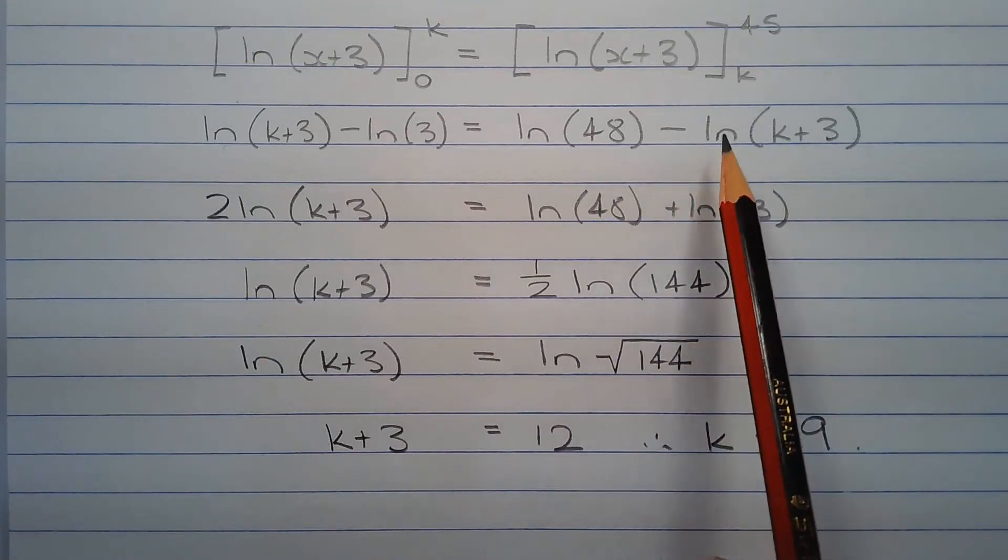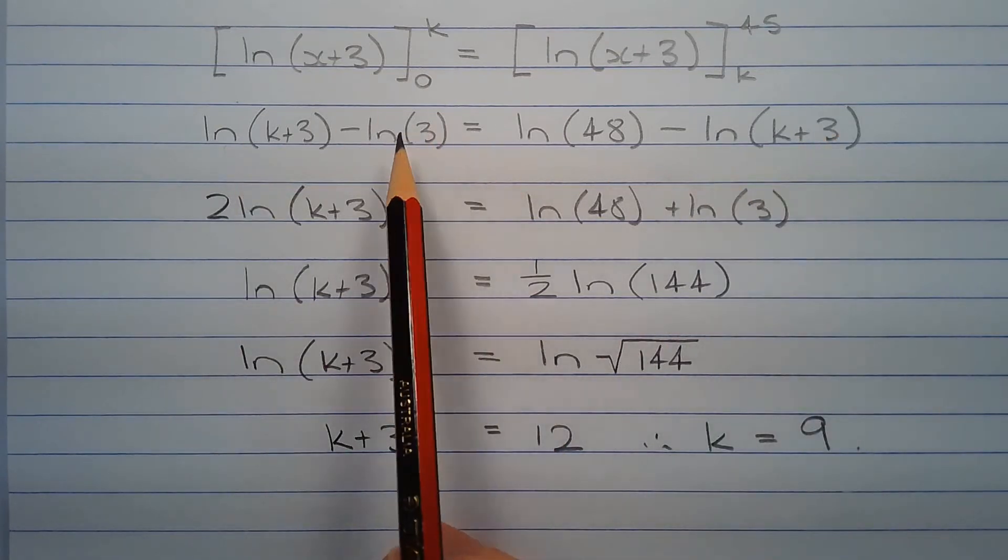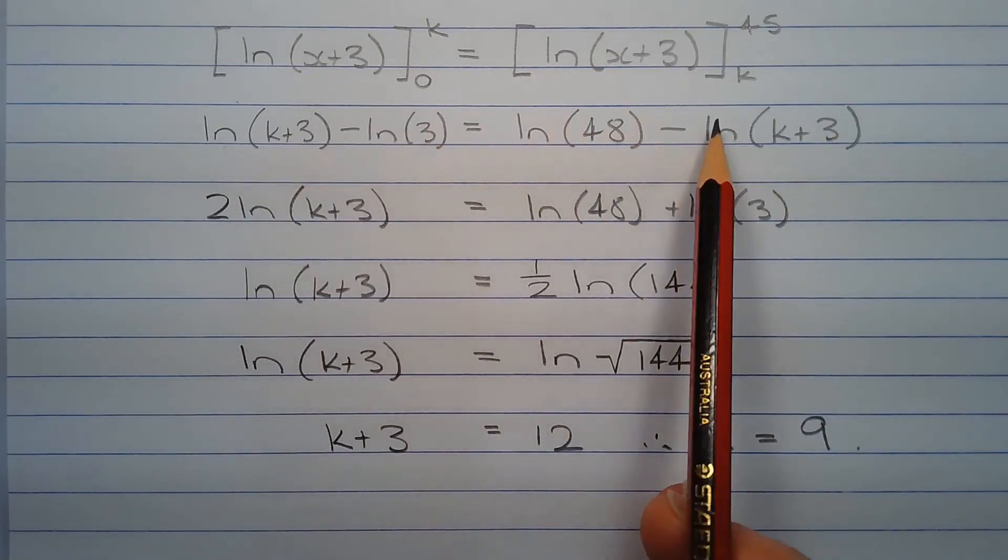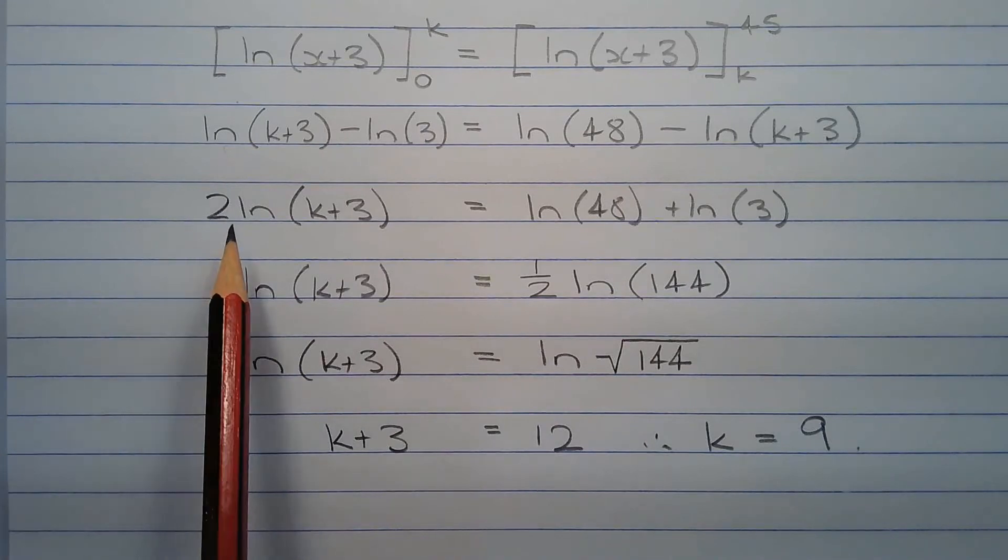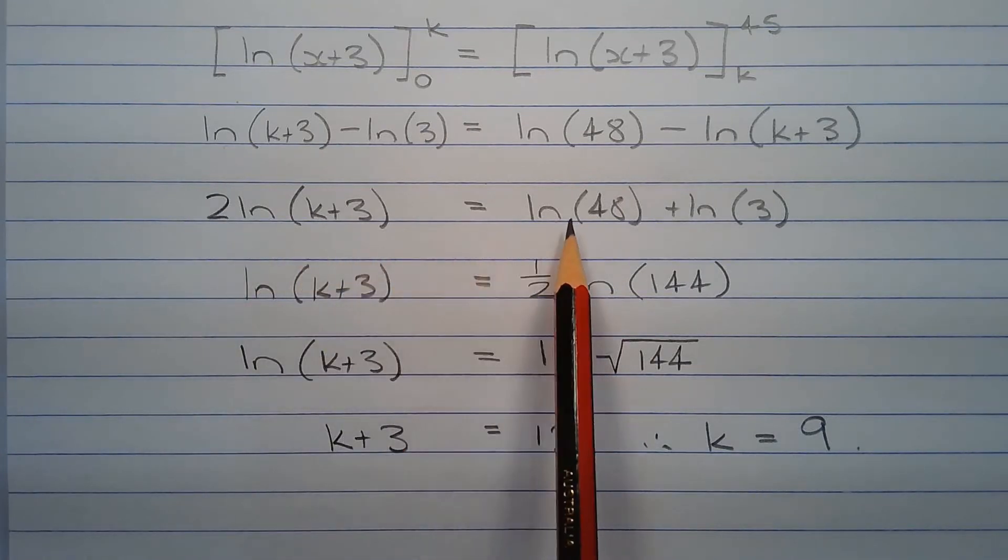Now adding ln of k plus 3 to both sides of this equation and also adding ln of 3 to both sides of this equation we end up with 2 ln of k plus 3 is equal to ln of 48 plus ln of 3.